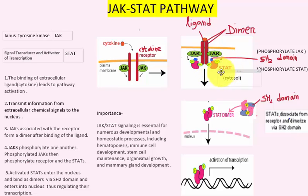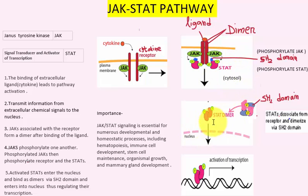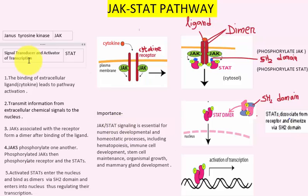JAK phosphorylates the STAT protein. Phosphorylation means the addition of a phosphate group. The activated STAT then enters into the nucleus, binds as a dimer, and regulates gene expression. The DNA is inside the nucleus, and the STAT protein's function is to transduce the signal and activate transcription by binding to the DNA.